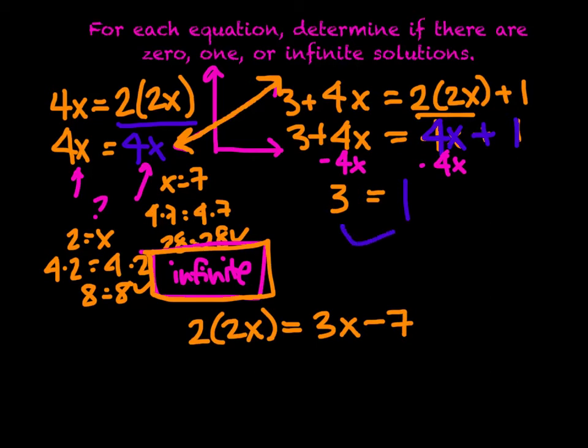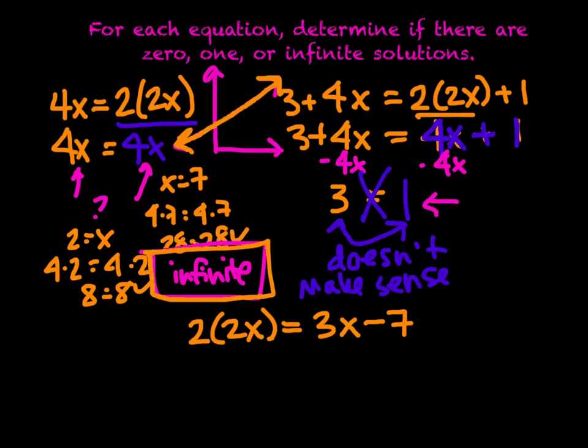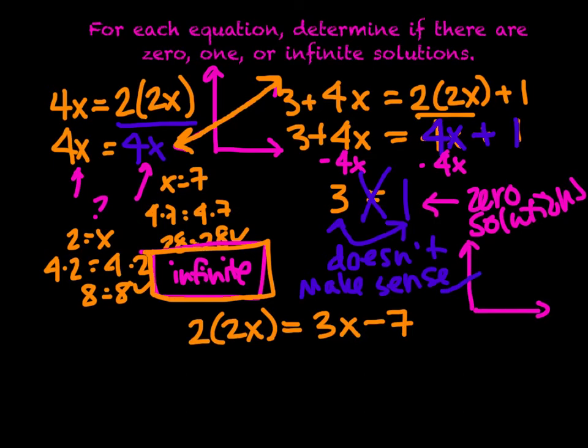What I see here is a statement that doesn't make sense. It doesn't ring true at all. 3 can never equal 1. It's not going to happen. So this can't work. If you ever get a solution that ends up not making sense, we can say there are 0 solutions. This is a situation where if we were to graph it, we would find that we have one line and then a parallel line. These lines are parallel. They'll never intersect. Therefore, there's never a location where they're going to cross. There's no solutions.